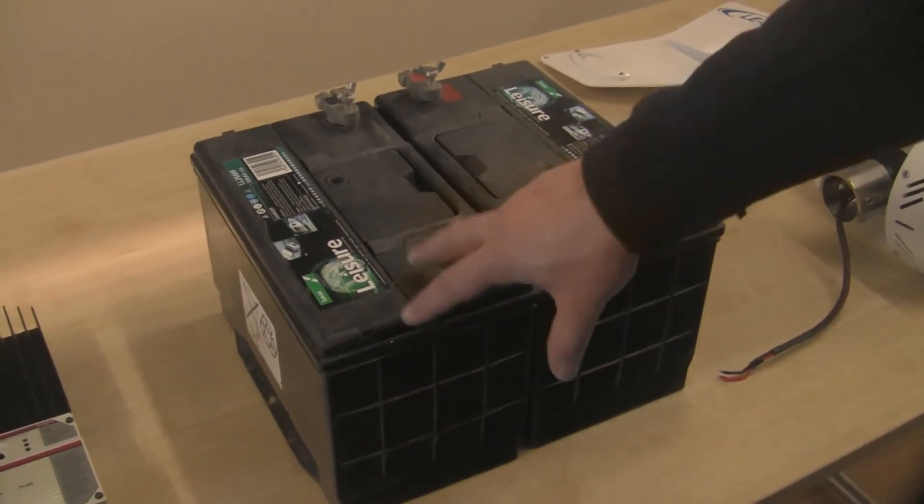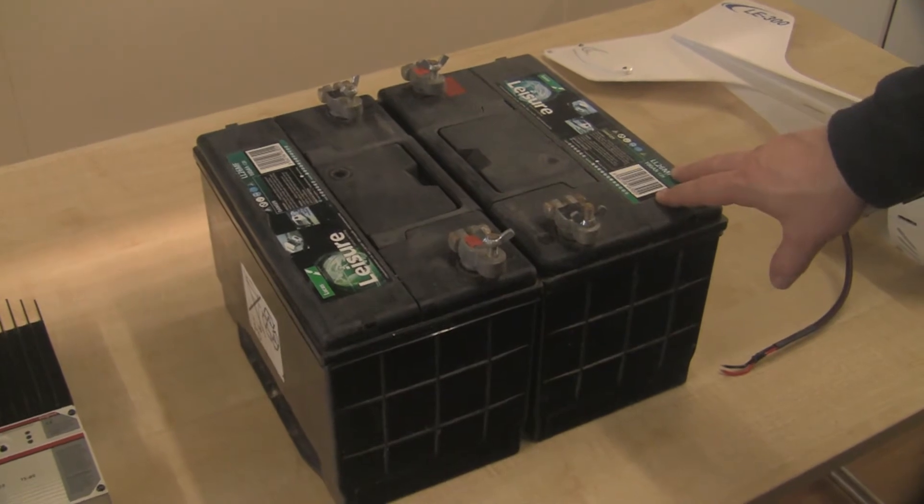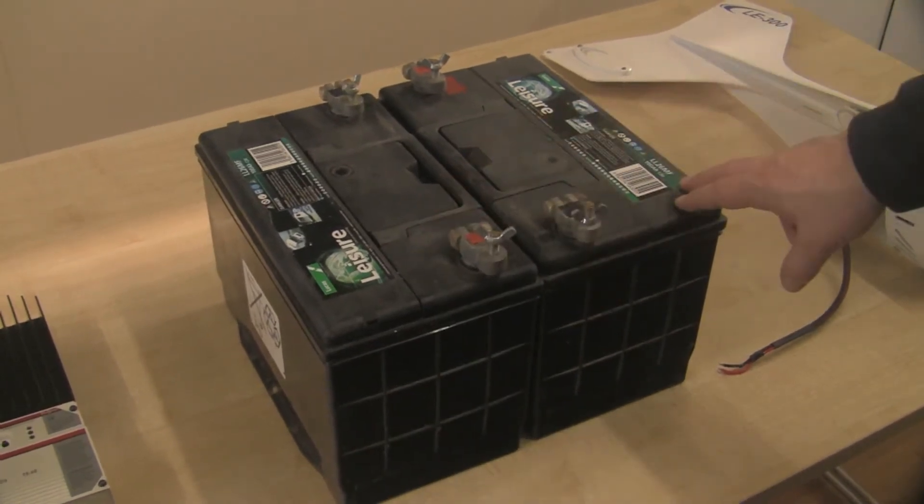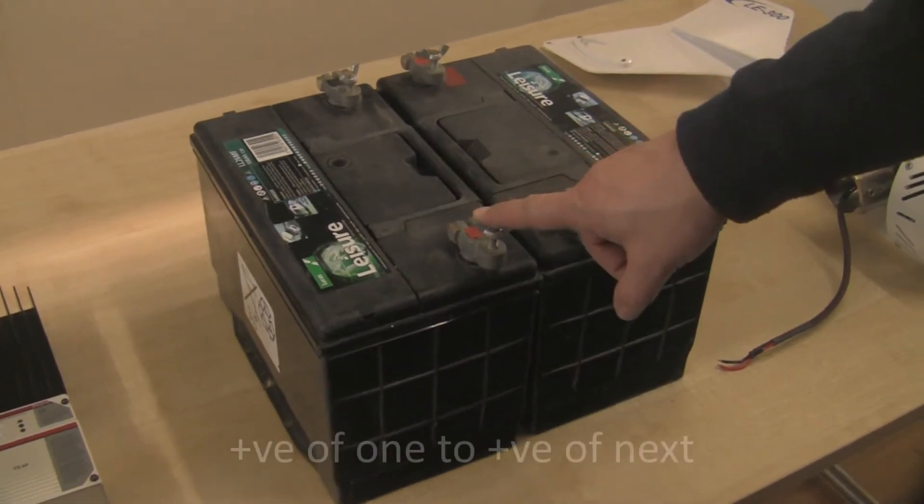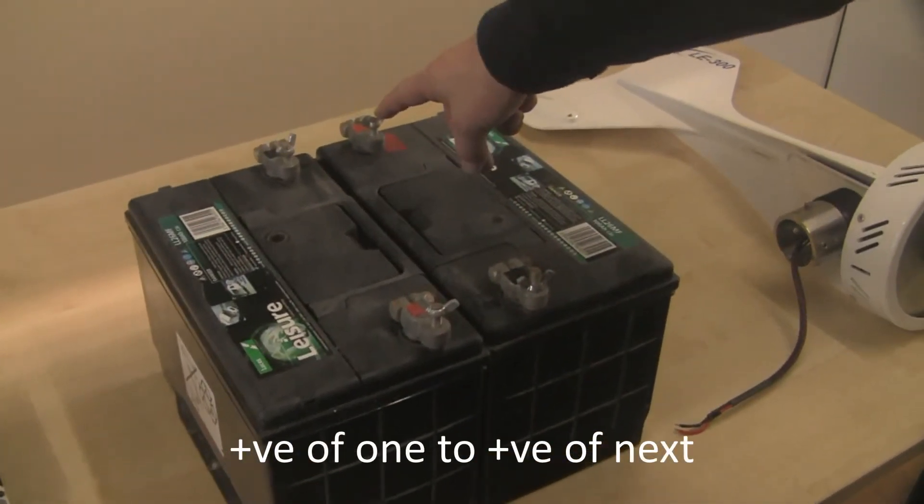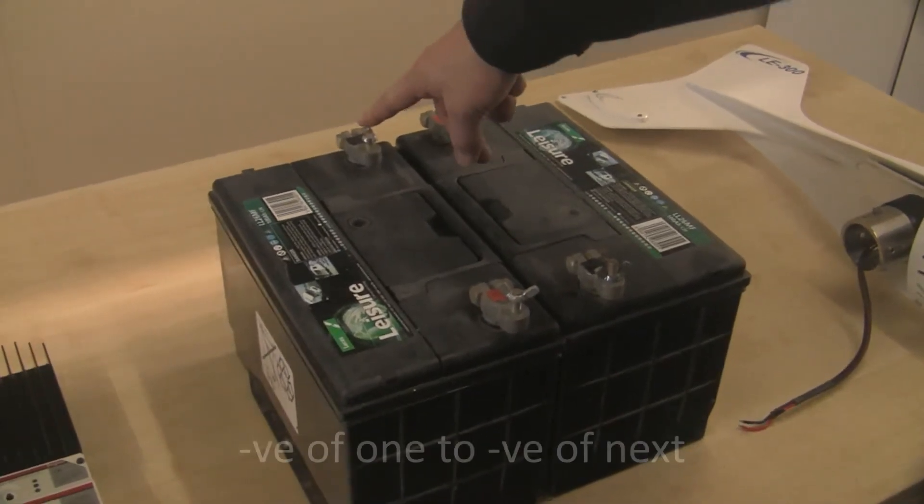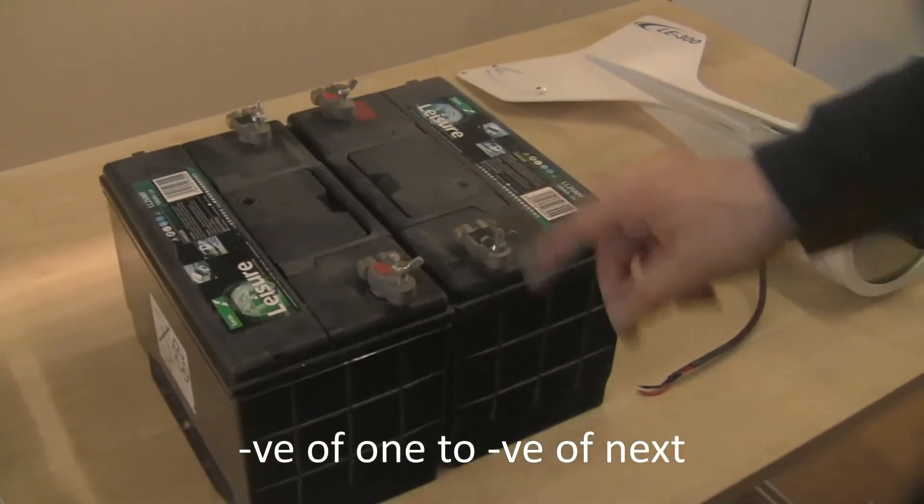And what we're going to do is connect these two 12 volt batteries together in parallel so we have a 12 volt battery bank. To connect batteries in parallel, the positive terminal of one battery goes to the positive terminal of the next, and the negative terminal of one battery goes to the negative terminal of the next.